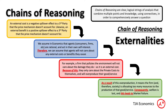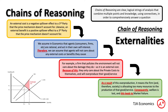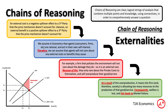For example, a firm that pollutes the environment will not care about the damage they do, as it's an external cost. Because of this, they only care about the private costs themselves and will overproduce their good or service. As a result of this overproduction, the firm and therefore society is allocating too many resources to the production of that good or service. Consequently, welfare is lost and this leads to market failure. And we can even include a diagram.